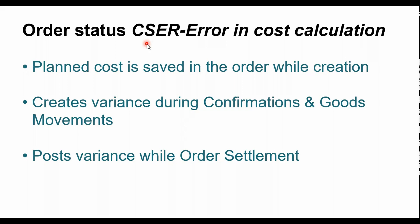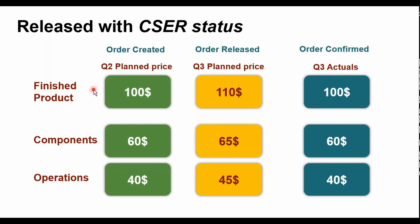Basically, when we create the production order or process order, the plan cost for the product being manufactured is saved during creation, confirmation, and goods movement of the order. This then creates a variance when comparing the plan cost versus the actual cost, and this variance is going to create noise when you perform the order settlement during the month-end process.